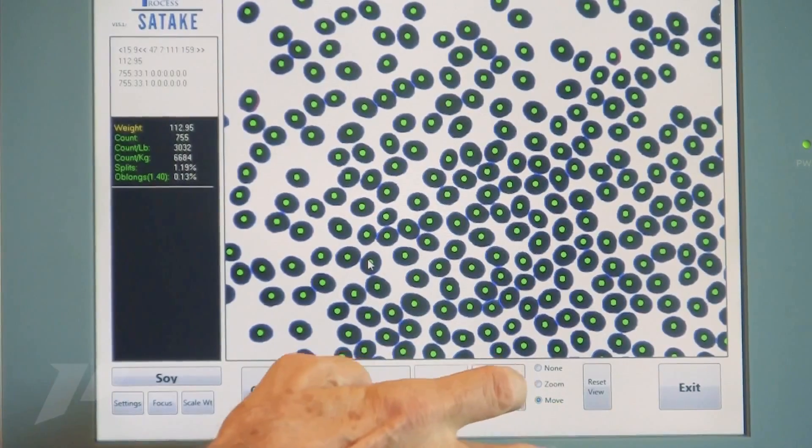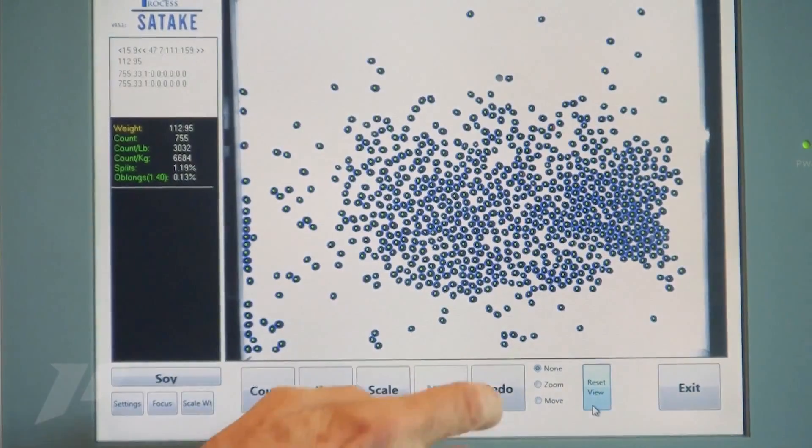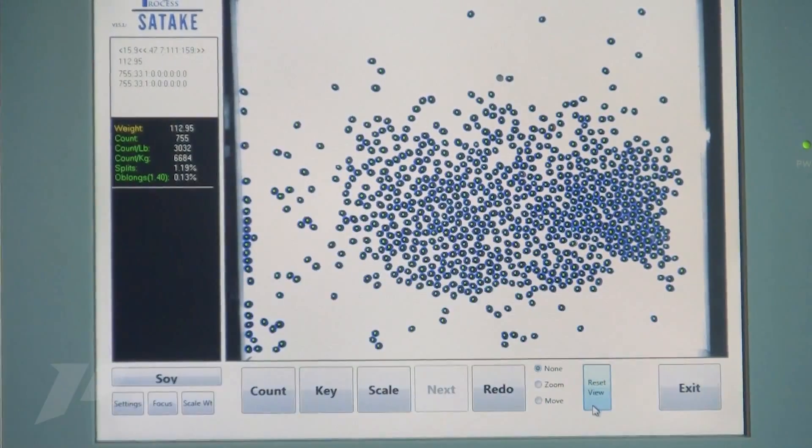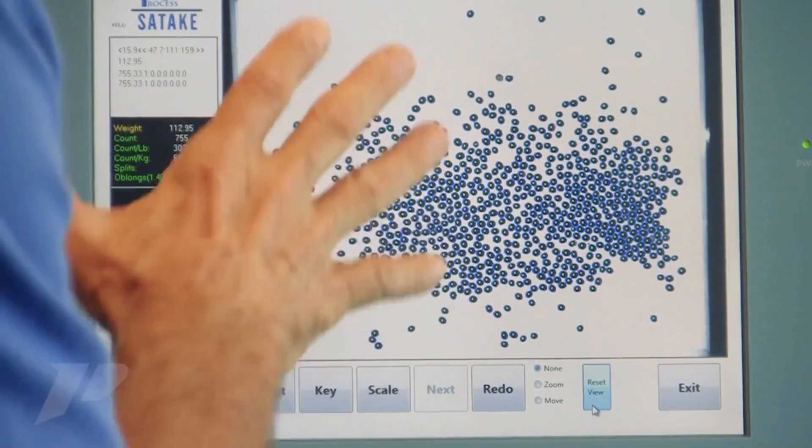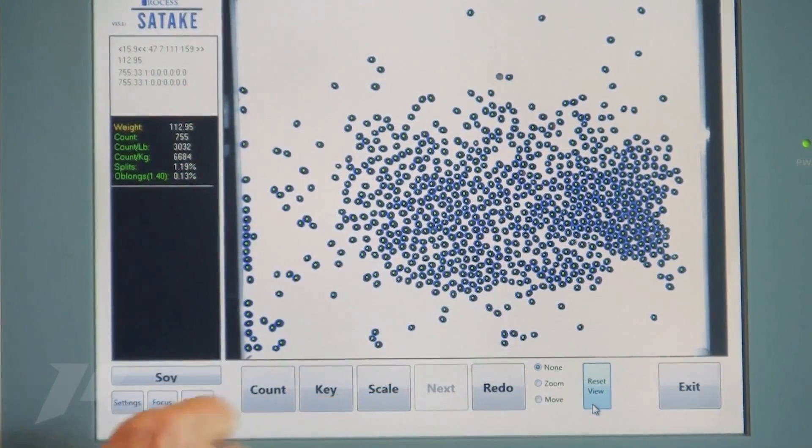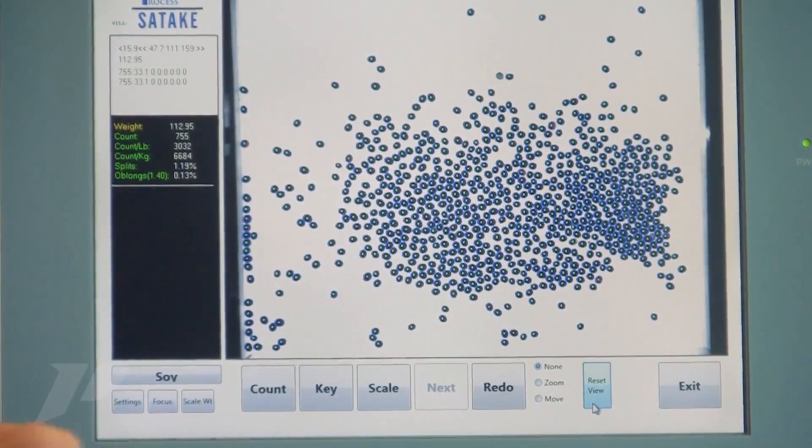We have a redo feature. If we did want to look more closely, I'll reset the view. In redo, we have a redo feature where we can recall that image, count it again. You can take as much time as you want to verify it. You have absolute assurance that the count is correct.